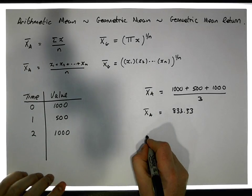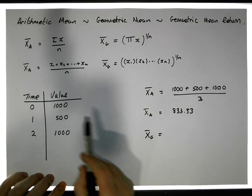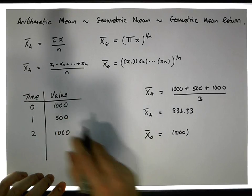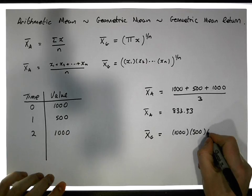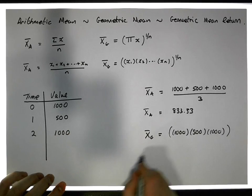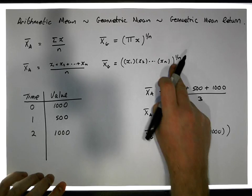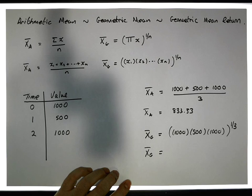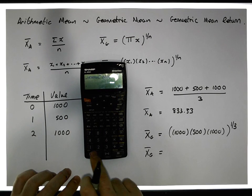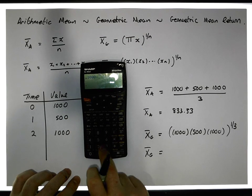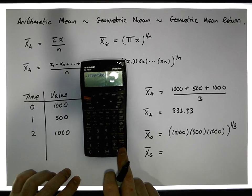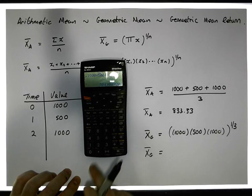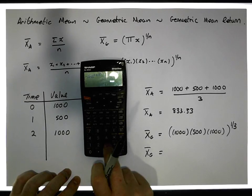Alternatively, the geometric average x̄_g would be the product of all of these: 1000 × 500 × 1000, raised to the power of the nth root. We have three values, so it's the third root — raised to the power of 1/3. So x̄_g is (1000 × 500 × 1000)^(1/3), which gives us a very large product that we then take the cube root of.